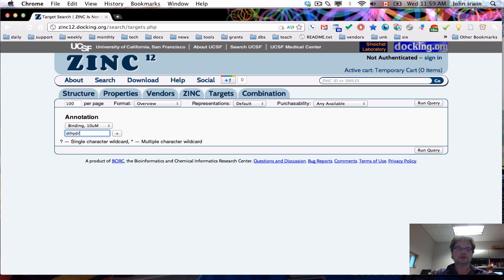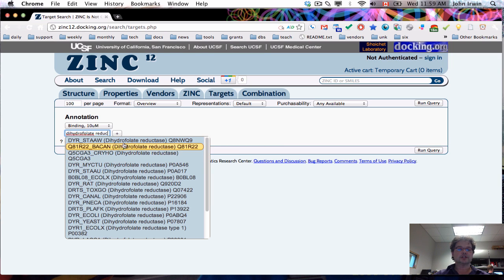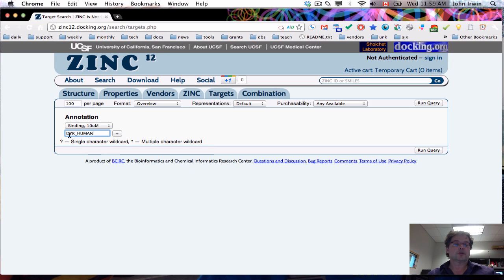So we're going to type in dihydrofolate reductase and you can start to see that they're from various microorganisms as well as E. coli, yeast and so on. The mammalian are down here at the bottom and we're going to pick dihydrofolate reductase human, which corresponds to a UniProt code of dyr underscore human.